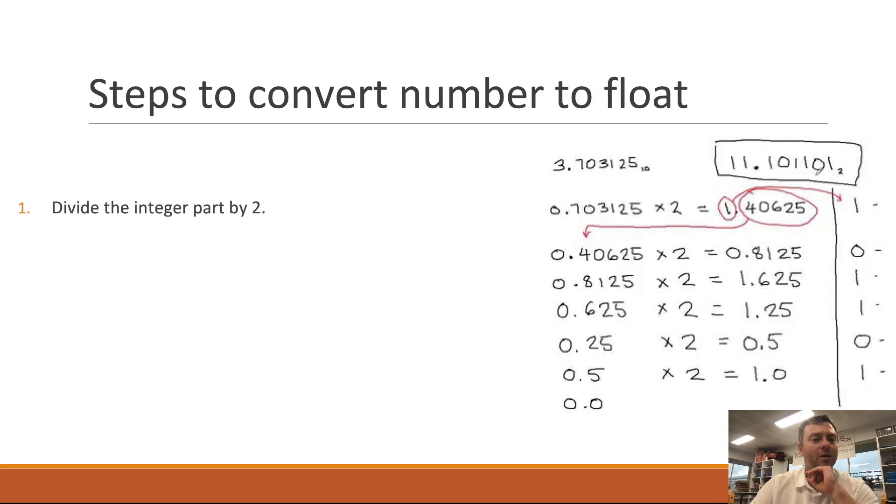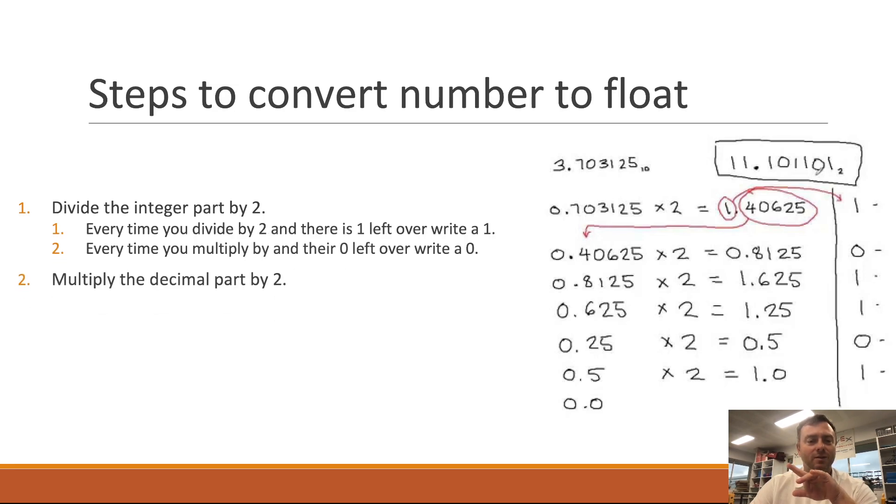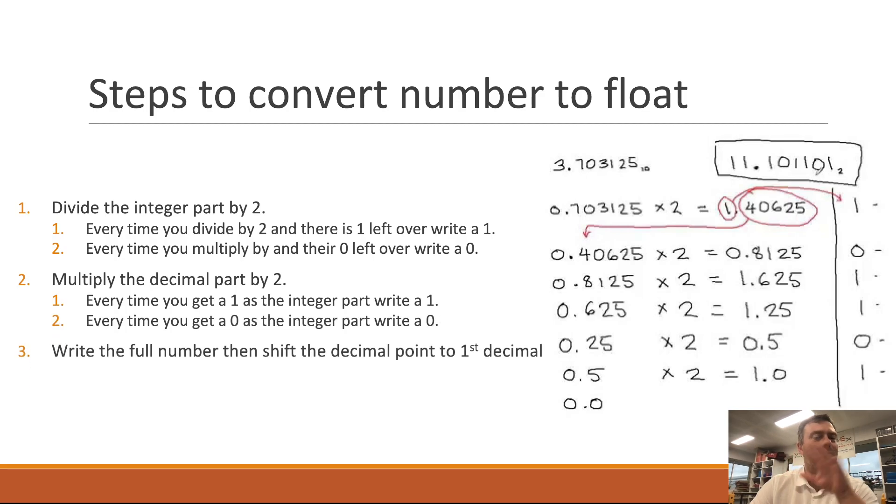The steps that we do: the first step is we divide the integer part by 2 until we get to a whole number. So you're left with either a 1 or 0 and you shift that across. You then multiply the decimal part by 2 until you get a 1 and a 0 which then gets rid of all the changes, the number into a binary form.